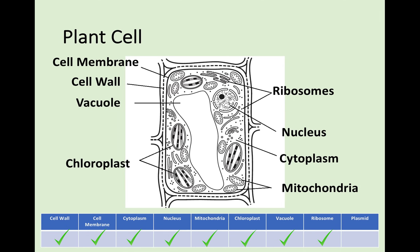The plant cell contains cell membrane, ribosomes and nucleus, cytoplasm and mitochondria that we have already looked at. But they also have a cell wall, vacuole and chloroplasts as well, which are not found in the animal cell.